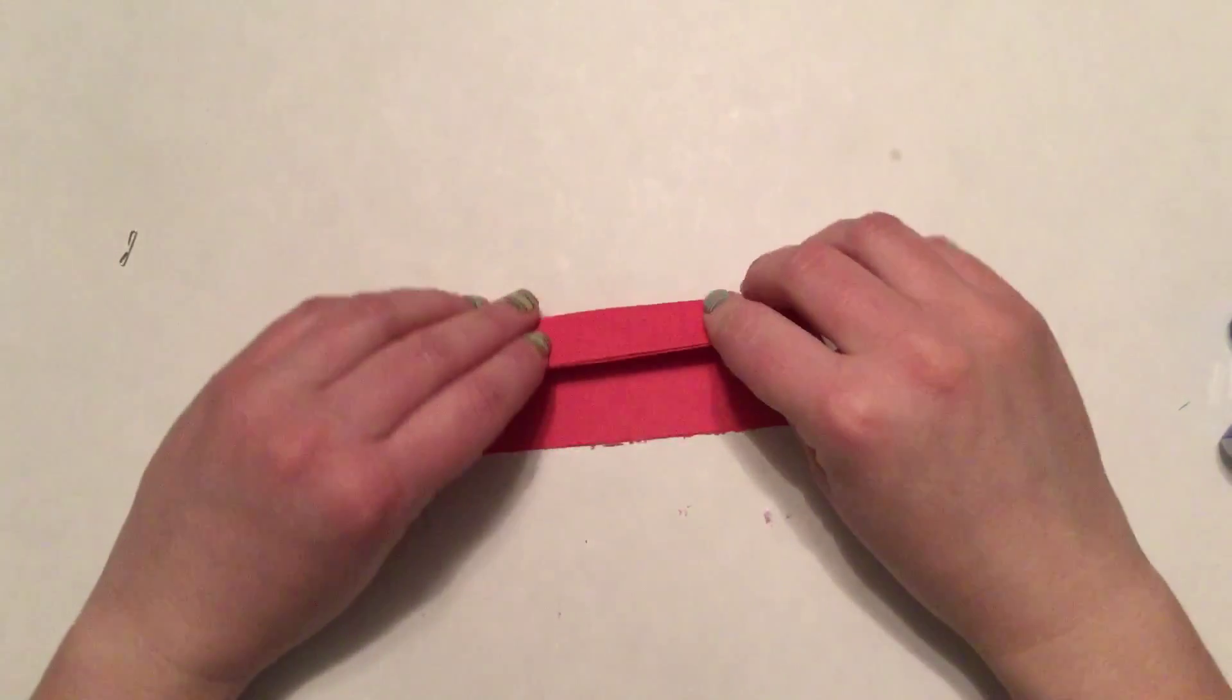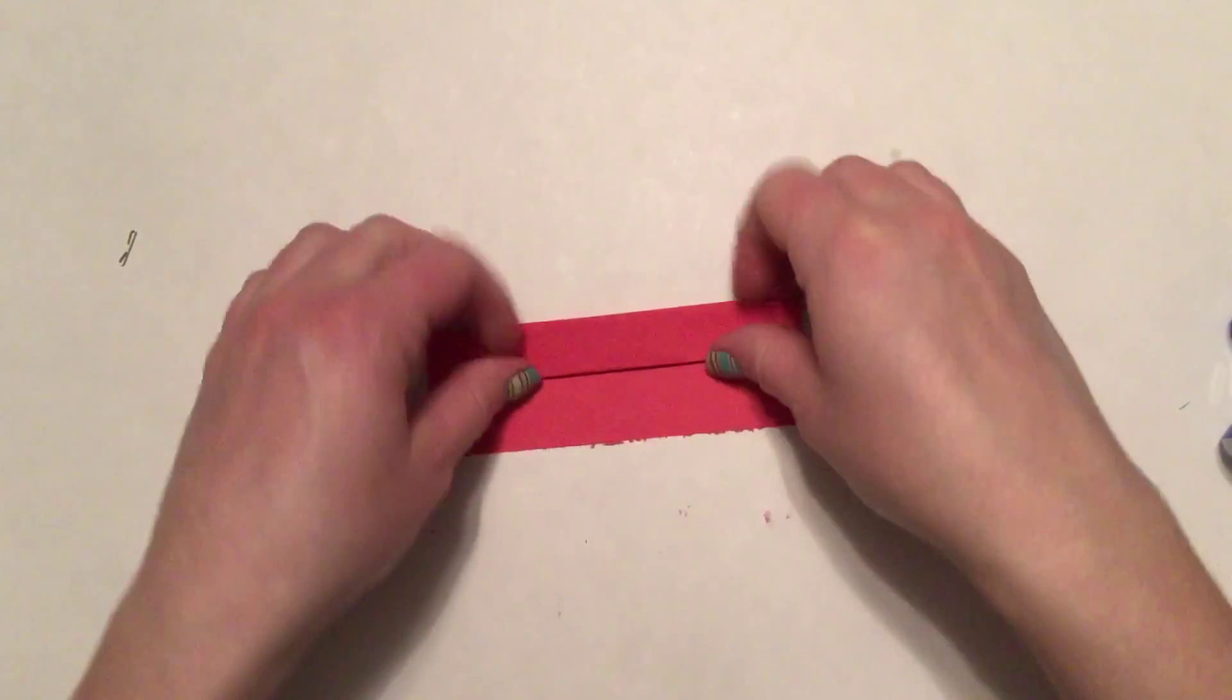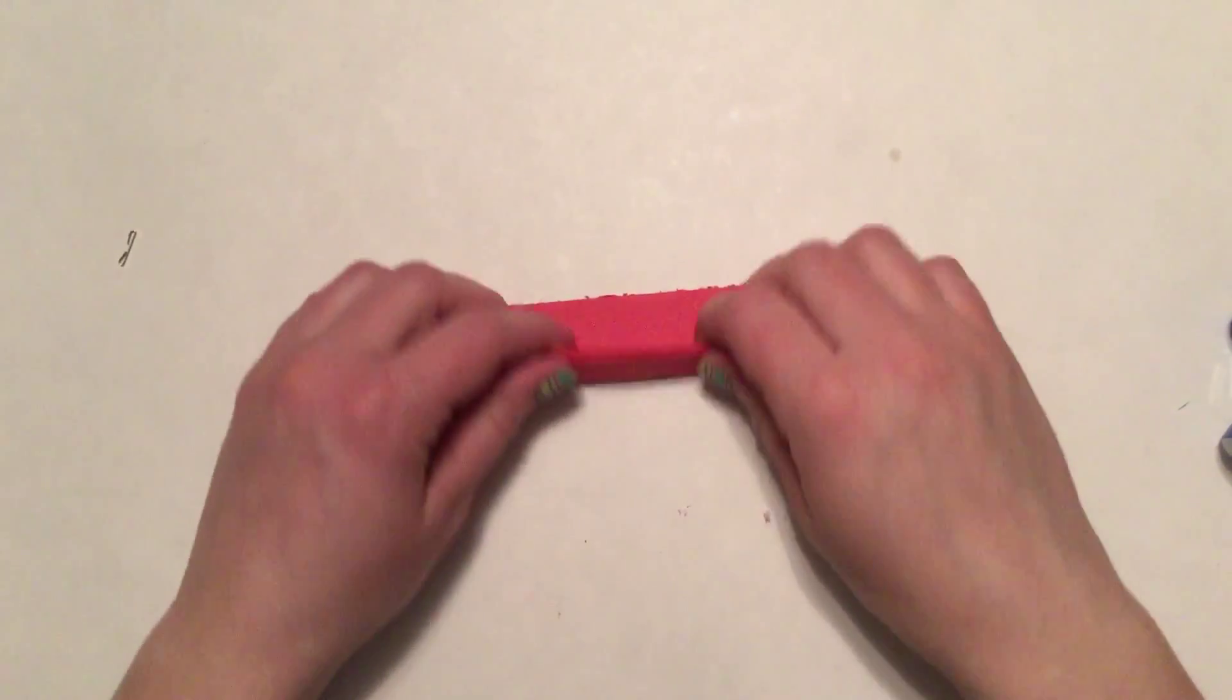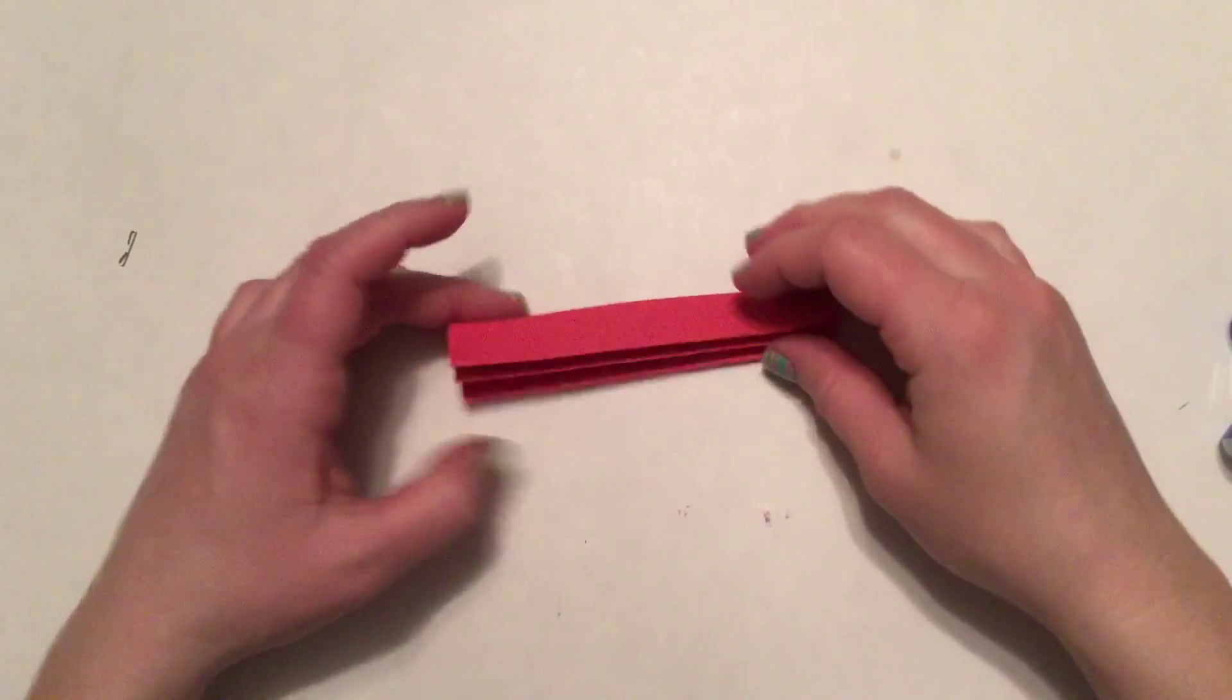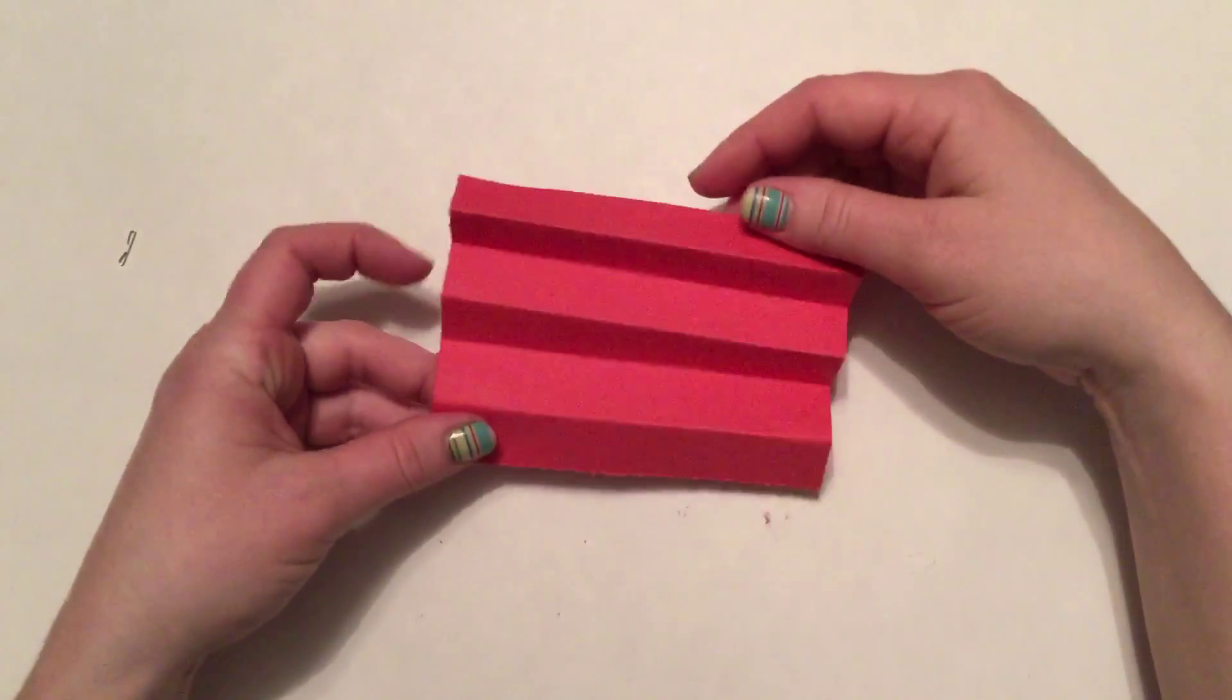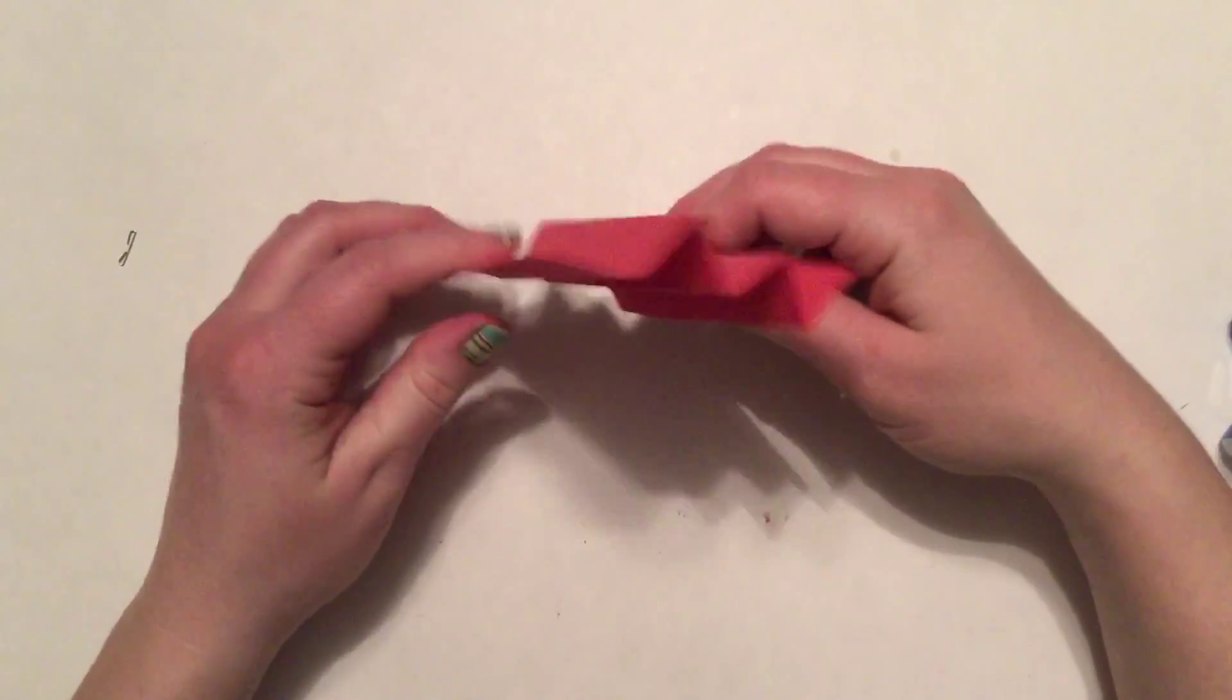Flip and fold towards yourself. Flip it again and fold away from yourself. Now I have a nice accordion fold that looks like a zigzag when you hold it up.